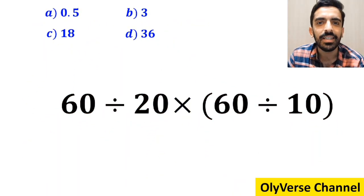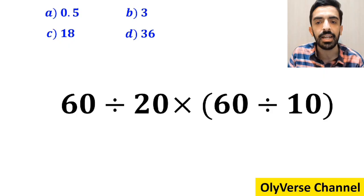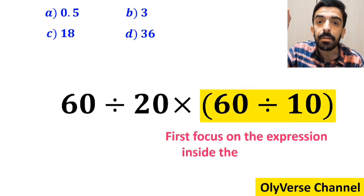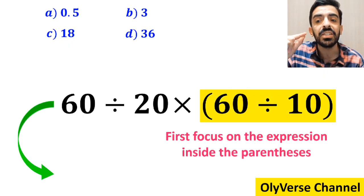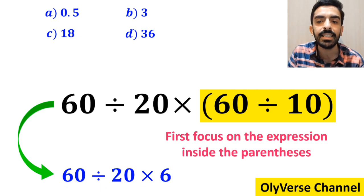Many people when starting to solve this question first focus on the expression inside parenthesis. Instead of considering the whole expression, they rewrite it as 60 divided by 20 then times 6.